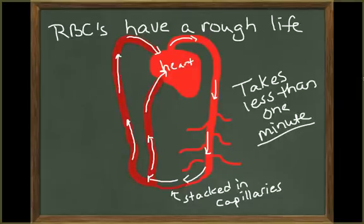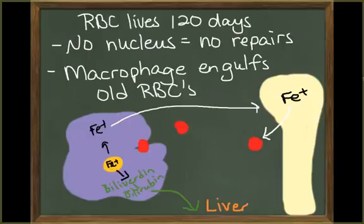Then it is rushed back to the heart where it will be pumped out again. With no nucleus, there is no repair mechanism for the red blood cell. Instead, it only lives for 120 days, and then either it ruptures or a phagocyte engulfs it as it starts to look worn down.